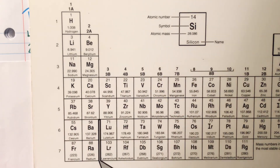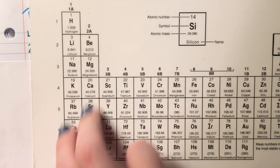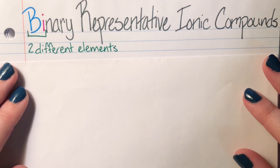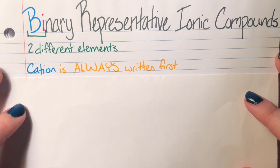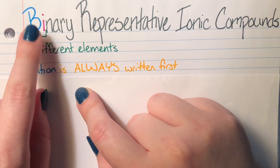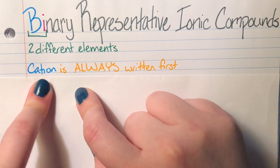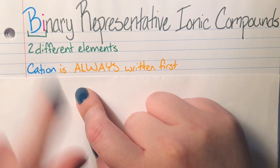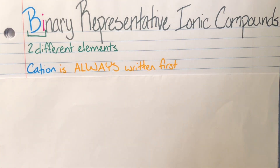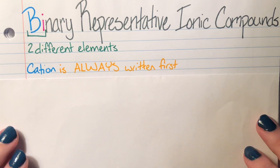Other metals do not act like this — these are representative metals that act exactly how we expect. In binary representative ionic compounds, I always list the cation first. The 'b' in binary is written in blue, the same color used for the cation. Cations are the good guys — they give away electrons, which is a nice thing to do, so they are written first.